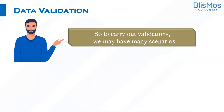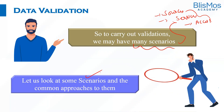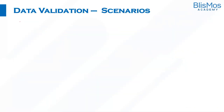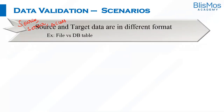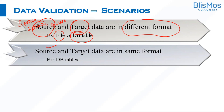Based on all these permutations and combinations, we may have many scenarios. These are based on the sources, whether they are installed on the same server, and whether the testing team has access to those sources. Let us look at some scenarios and the common approaches to them. One very basic scenario is where the source and target are in a different format — for example, the source may be in a file format but the target is in a database format.